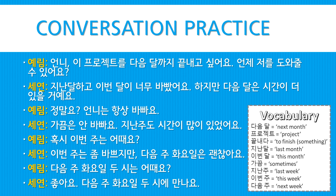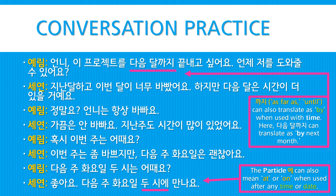혹시 이번 주는 어때요? — How would this week be by chance? 이번 주는 좀 바쁘지만, 다음 주 화요일은 괜찮아요 — This week is a little busy, but next week Tuesday is okay. 다음 주 화요일 2시는 어때요? — How about next week Tuesday at 2 o'clock? 좋아요. 다음 주 화요일 2시에 만나요 — We'll meet next week Tuesday at 2 o'clock. Note that the particle 에 can also mean 'at' or 'on' when used after any time or date.